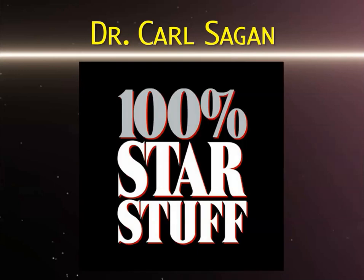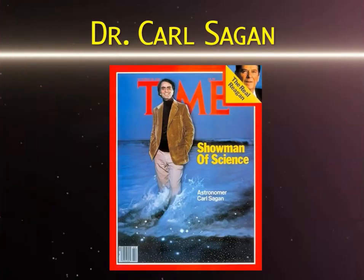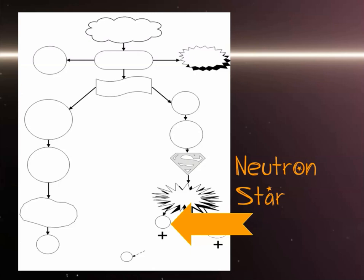Sagan made the cover of Time magazine — 'showman of science.' As Physics Girl mentioned, the supernova explosion results in neutrons being pressed against neutrons in the remnant core — atomic nuclei pressed against atomic nuclei — forming one of the absolutely densest and most spherical celestial objects: neutron stars.